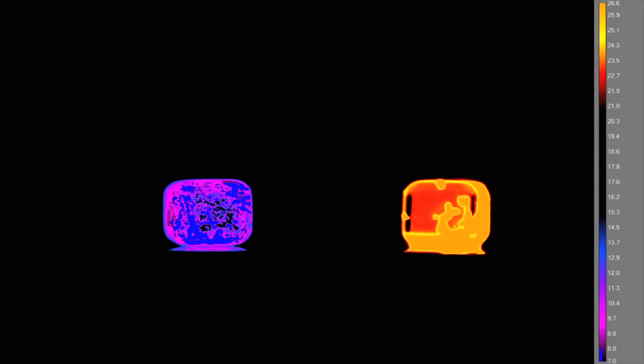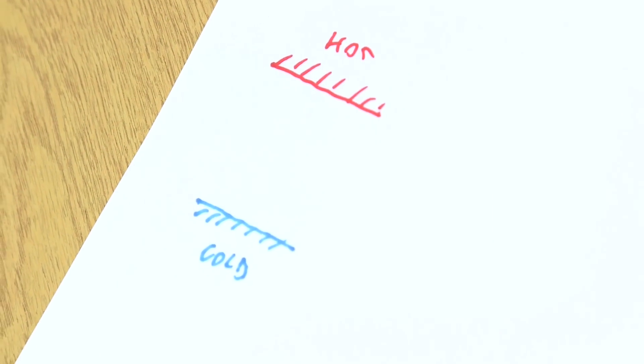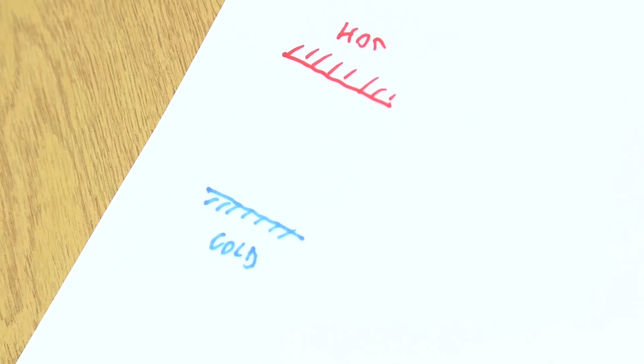Those two statements sound like completely different things — they're talking about completely different things — but it turns out they're exactly equivalent to one another. The way to show this is by demonstrating that if one version of the second law isn't true, then the other one isn't true either.